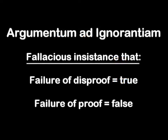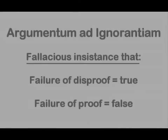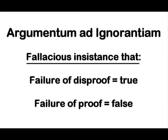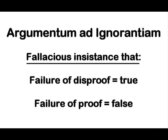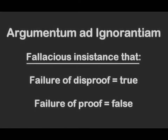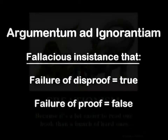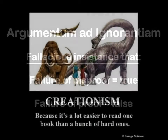The argumentum ad ignorantium erroneously assumes that failure of disproof indicates that a claim is true, or that failure of proof indicates that a claim is false. These combinations are included in the possibilities, but they are not the only possibilities. The argumentum ad ignorantium is frequently implied rather than being explicitly stated in common fallacious strategies used by creationists.